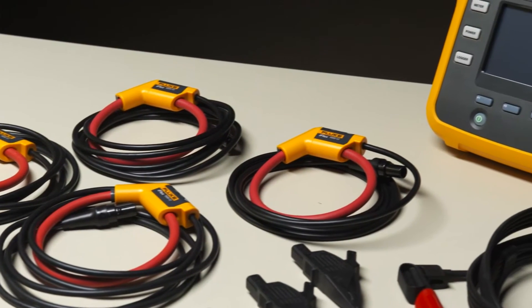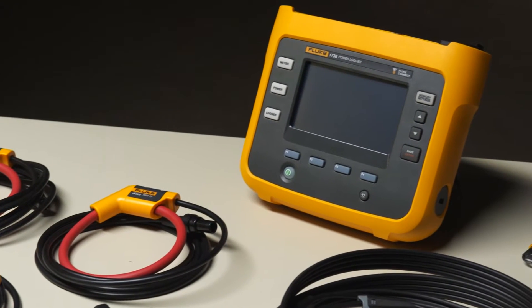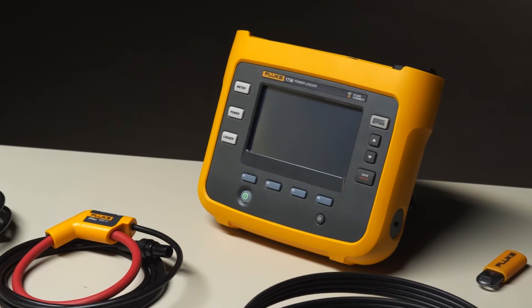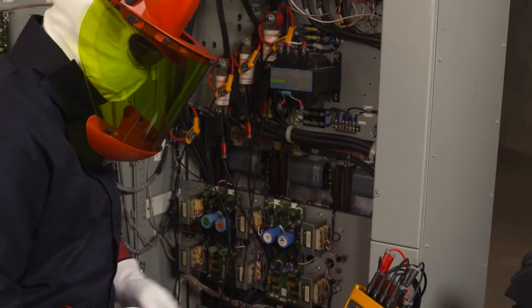The Fluke 1736 and 1738 power loggers are based on the same award-winning platform as the Fluke 1730 energy logger. In addition to helping you quantify and qualify energy usage,